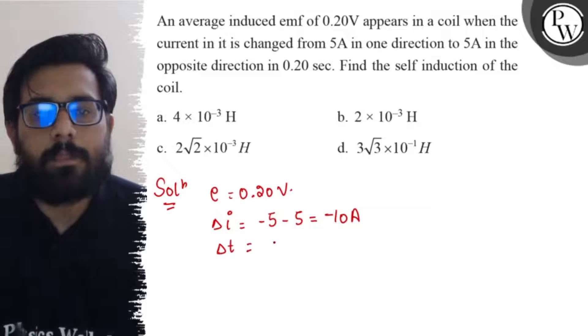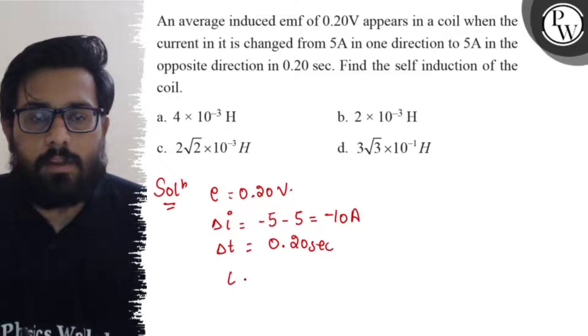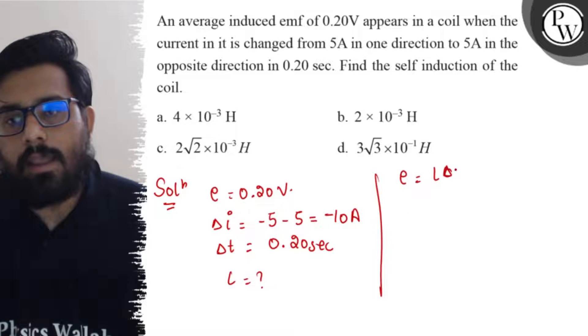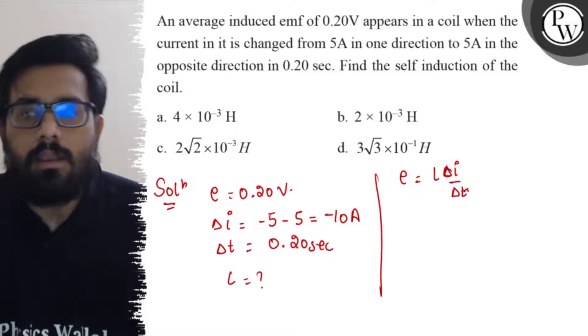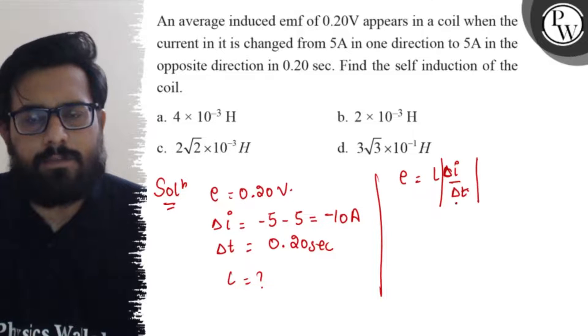Delta T is given as 0.20 seconds and we have to calculate the value of L. Now we know the relation that E equals L delta I by delta T. So we put a negative sign basically, but if you consider the magnitude, it will be okay.